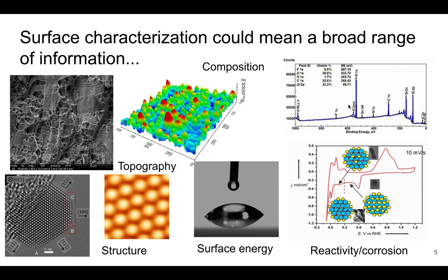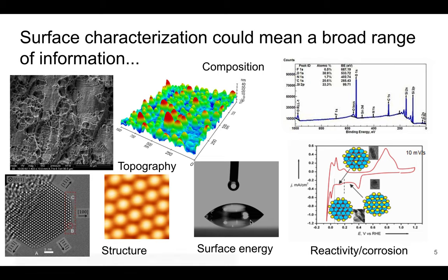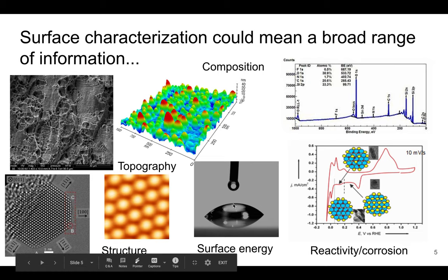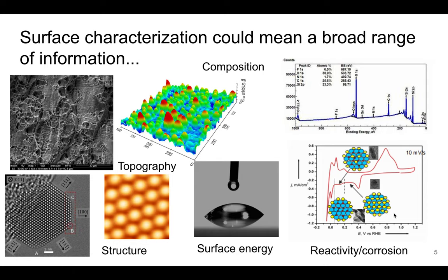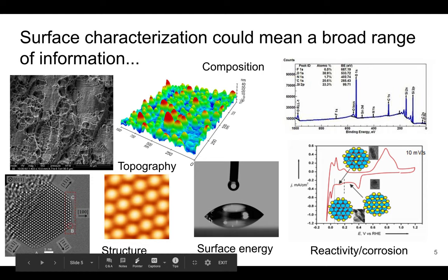We also may want to know the composition of the surface. Things like EDS can tell us composition, but we might want to know at an even finer level what the composition of the sample is. There are different compositional techniques that we'll look at, and that will be our focus for this section. We can also look at surface energy — things like a water droplet on a surface, whether it's hydrophobic or hydrophilic. Also, reactivity and corrosion involve electrochemistry, which are surface-sensitive techniques because these reactions occur on the surface. A contact angle test, where we apply a droplet and measure the angle with the surface, is one example.